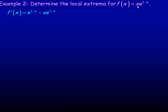That is a product — x is one function, e^(1-x) is another. So applying the product rule, we start by differentiating x first. We write a 1, and that gets multiplied by the second function, e^(1-x). That is the first part of the product rule.